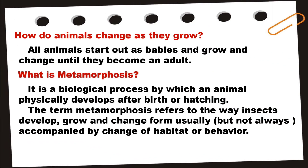How do animals change as they grow? All animals start out as babies and grow and change until they become an adult. What is metamorphosis? It is a biological process by which an animal physically develops after birth or hatching. The term metamorphosis refers to the way insects develop, grow, and change form, usually but not always accompanied by a change of habitat or behavior.